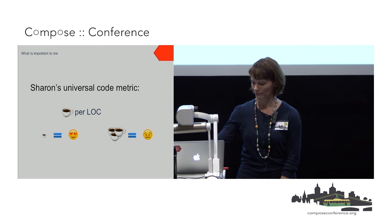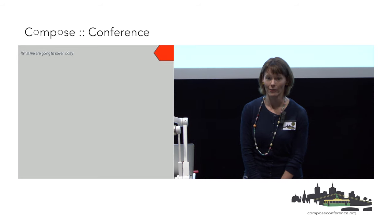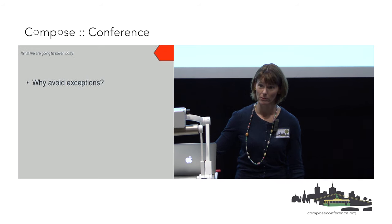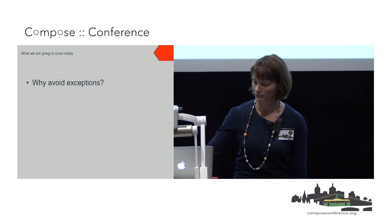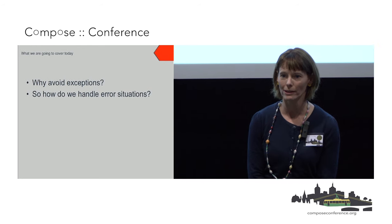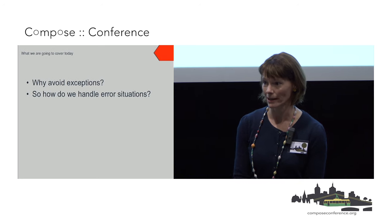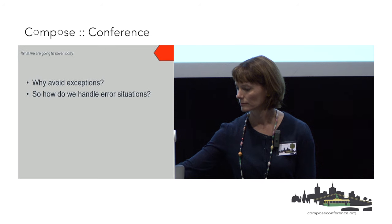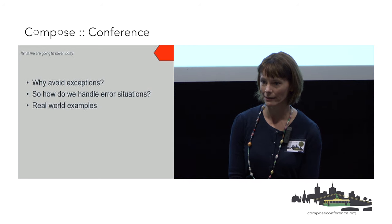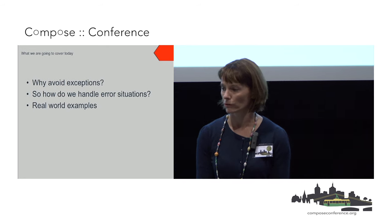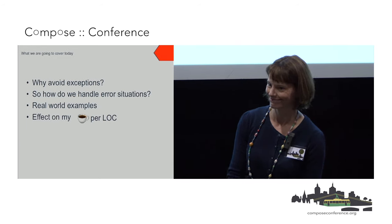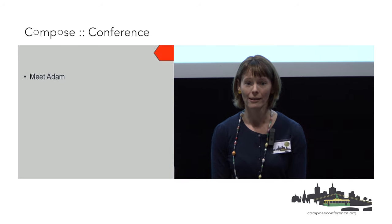We're here to talk about exceptions. First, why wouldn't we want to use exceptions? We've used exceptions for a long time — something goes wrong, we throw an exception. After we've worked out why we don't want to use exceptions, we're going to work out how to handle errors instead, because in the real world things really do go wrong. We'll look at some real-world examples from the REA world, and at the end I'll show you how this saves me caffeine.